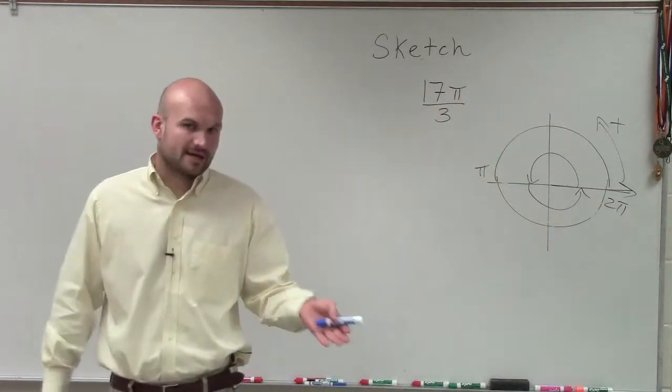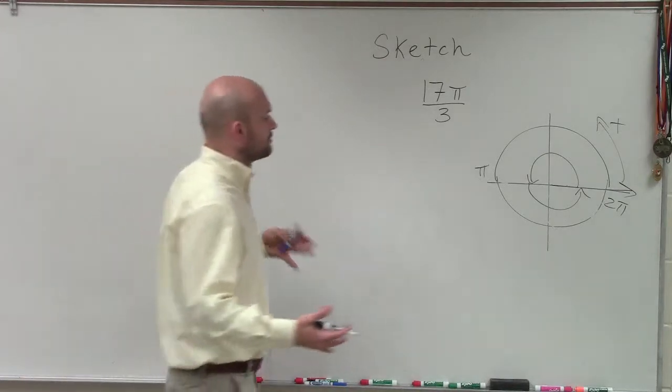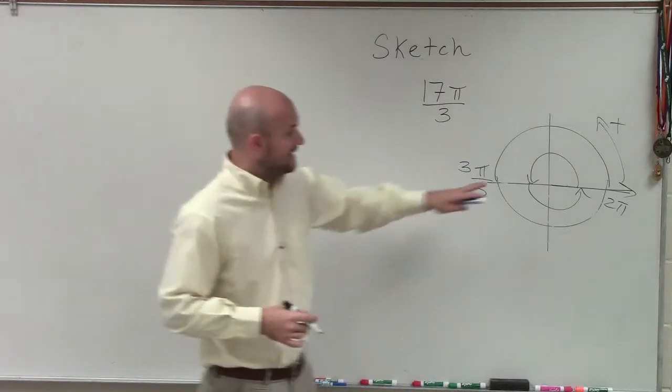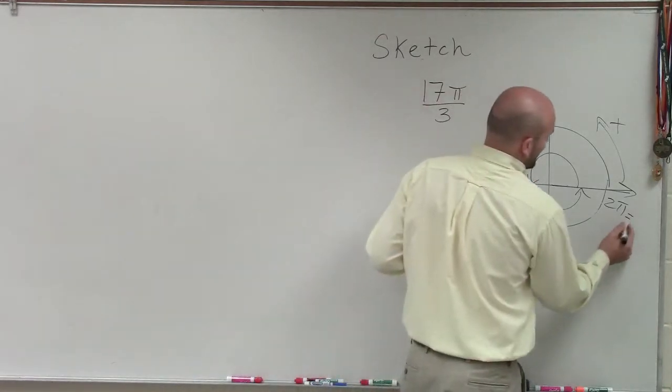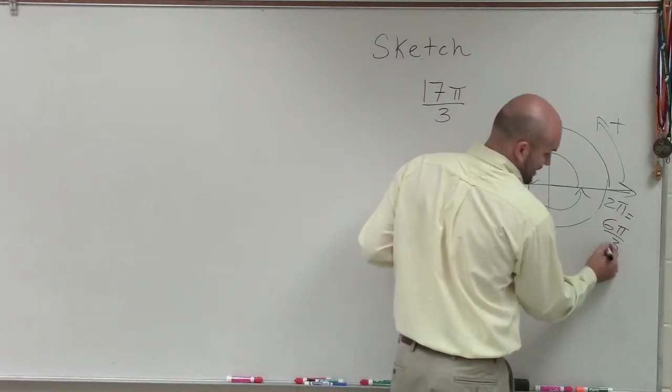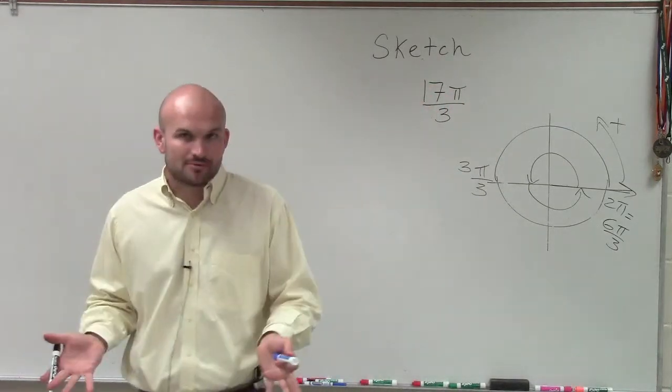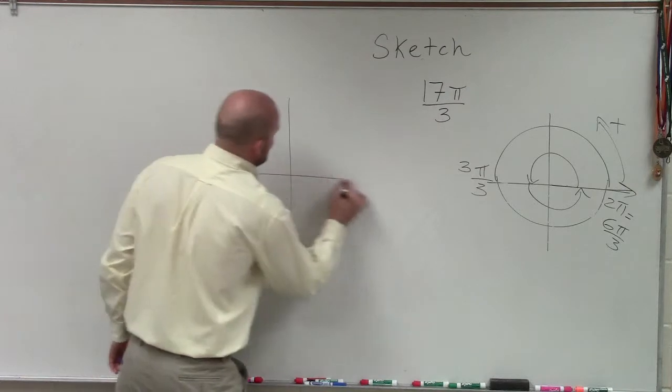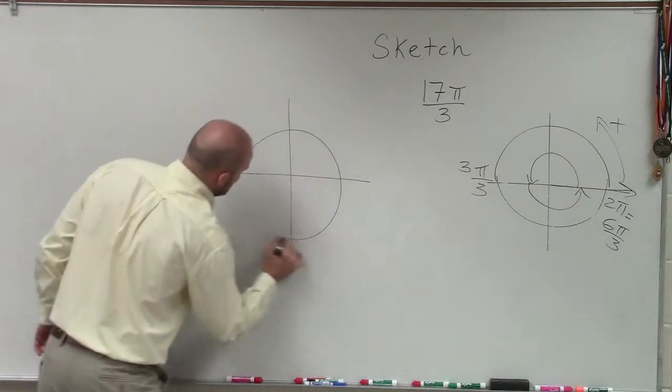But when I'm looking at a denominator base 3, I want to rewrite my pi in terms of thirds. So that would be 3 pi over 3, and 2 pi I would rewrite as 6 pi over 3. It's the exact same measurement, but I like to write them as thirds, so I can understand a little bit better how to count this up.